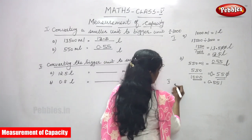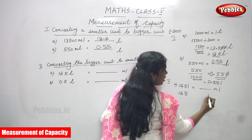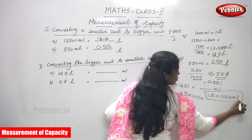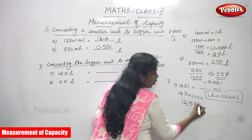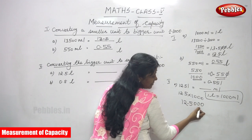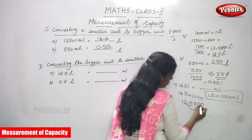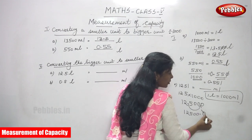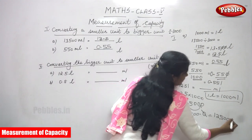The first question: twelve point five liters is equal to how much milliliter? One liter equals one thousand ml, so you multiply by one thousand. Write twelve point five as it is, then add three zeros. Move the decimal point three places to the right — one, two, three — giving one two five zero zero, then the point. After the point, do not consider the zero. The answer is twelve thousand five hundred milliliter.